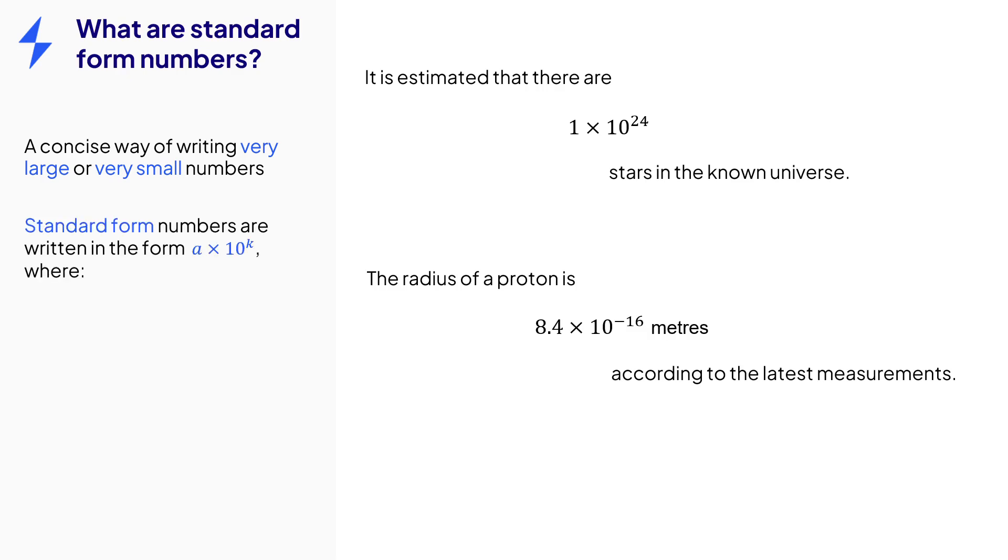Now standard form numbers appear in a particular form: a times 10 to the k, where a and k are numbers, but also where a needs to be at least 1 but also less than 10.